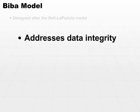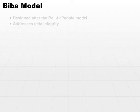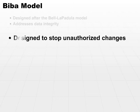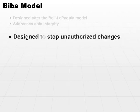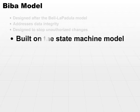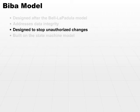Since the Bell-LaPadula model was designed to address confidentiality — trying to keep confidential data from being disclosed in an unauthorized manner — the Biba model is designed in a similar fashion, but it is trying to stop any unauthorized changes to data, and often they're used together. It is also built on the state machine model, and the biggest difference is not in implementation, but rather in focus: what are we trying to stop? We're trying to stop unauthorized modifications.